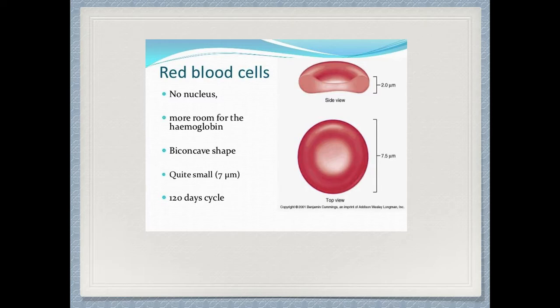The red blood cell also doesn't have a nucleus. This is because it needs to give more room for the hemoglobin, which is the main chemical in the cell that combines with oxygen. Red blood cells are about 7 micrometers across and live for about 4 months, but they are produced at a very fast rate of about 9 billion per hour. Their small size also enables them to squeeze through even the tiniest capillaries, meaning oxygen can be taken very close to every cell in the body.